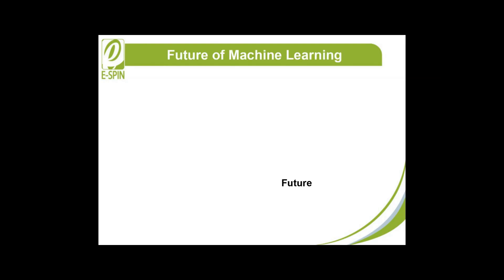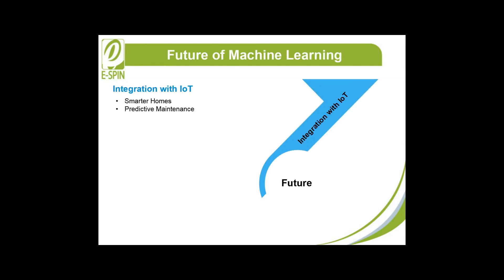The future of machine learning includes integration with IoT, set to revolutionize how we interact with our environment. Smarter homes will analyze data from connected devices such as thermostats, lights, and security systems to create homes that adapt to user preferences and behaviors. Predictive maintenance will enable IoT devices to detect anomalies and predict failures in machinery and vehicles, reducing downtime and costs.